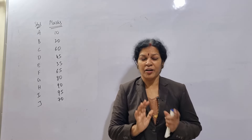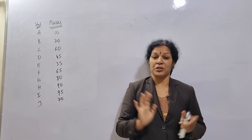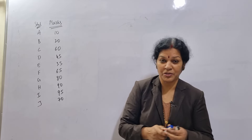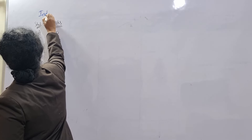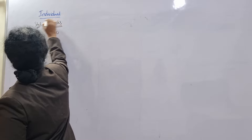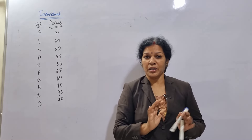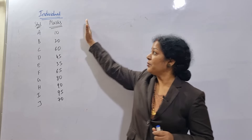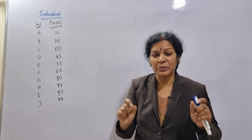Here, how many students are there? 10 students. Each student's marks are given to us — this is individual series. Now if I tell you discrete series, you will understand the difference. In individual series, there are 10 students and each student's marks are given individually.